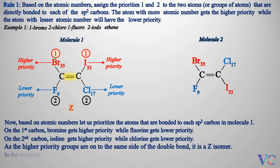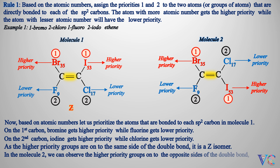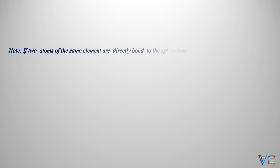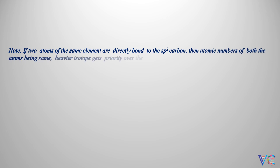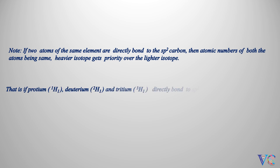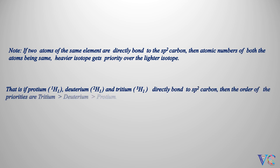In molecule 2, we can observe the higher priority groups on the opposite sides of the double bond, so it is an E isomer. Note: if two atoms of the same element are directly bonded to the sp2 carbon, then the atomic numbers of both atoms being the same, the heavier isotope gets priority over the lighter isotope. That is, if protium, deuterium, and tritium are directly bonded to sp2 carbon, then the order of priorities is: tritium > deuterium > protium.